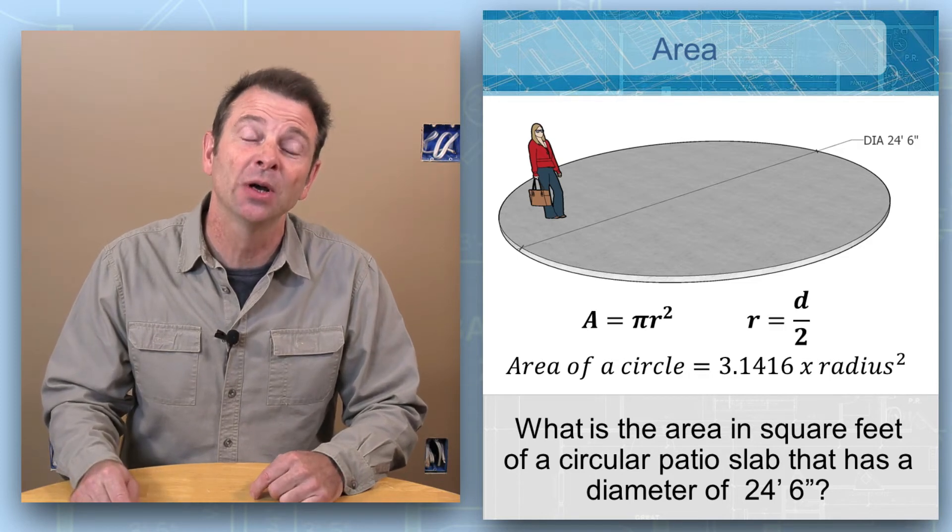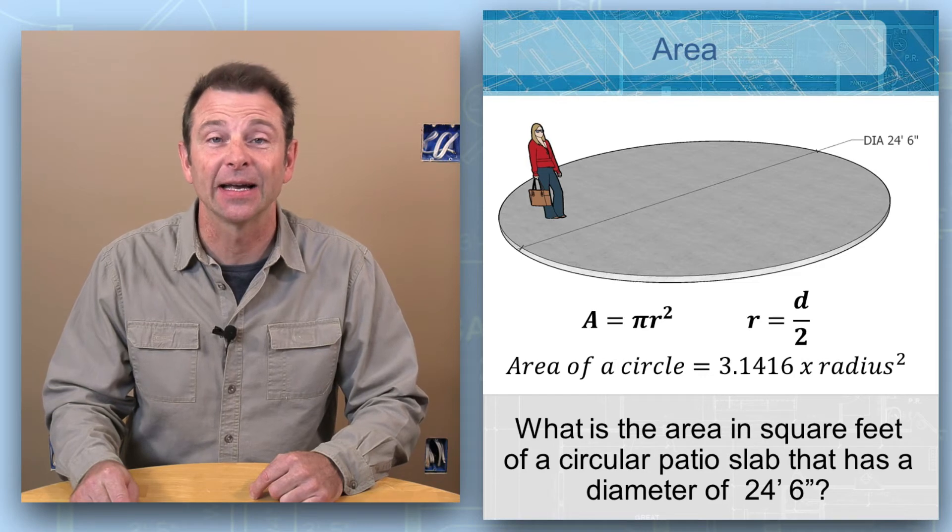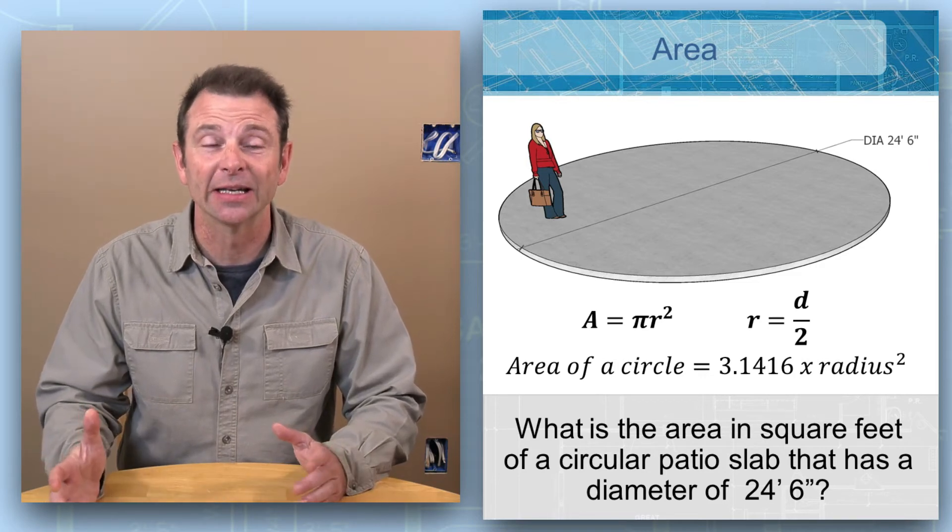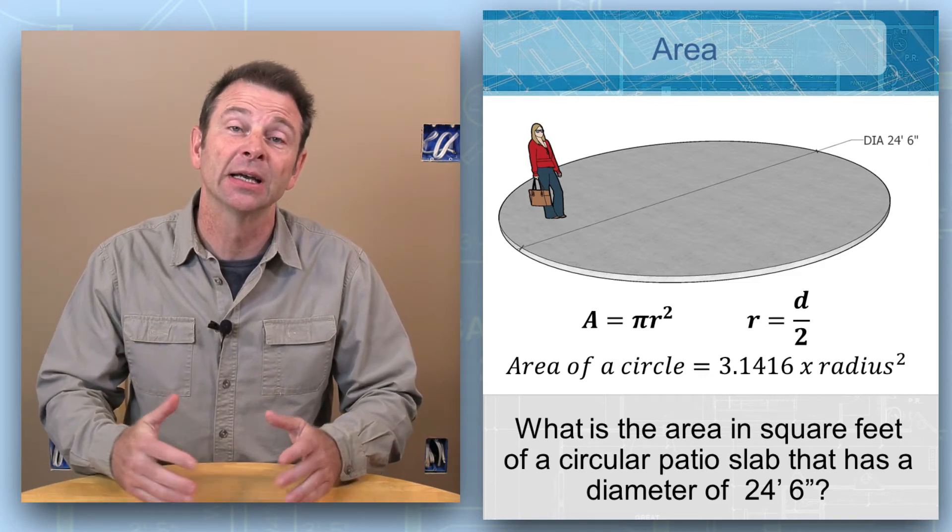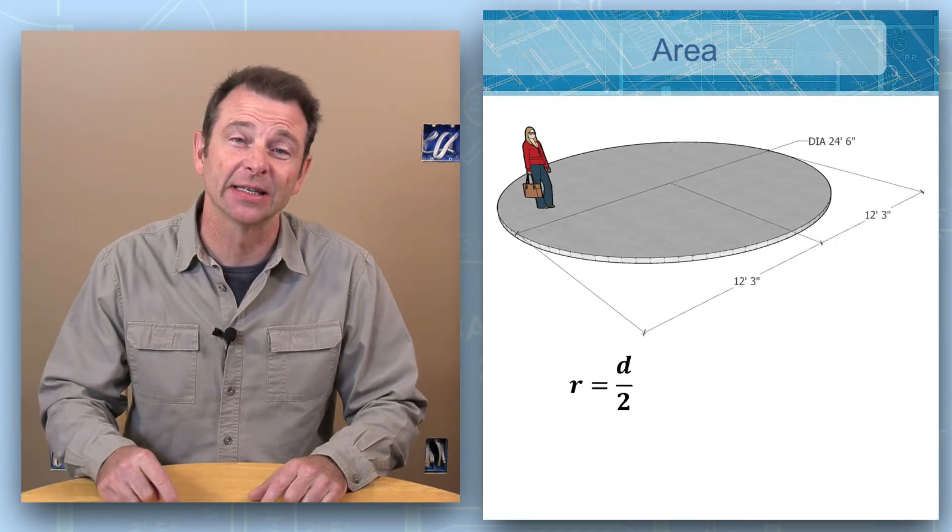We have been given the diameter of this circle at 24 feet 6 inches, but we know that diameter is 2 times the radius. So we can divide this diameter in 2 to arrive at our radius, then plug it into our formula and then solve it.